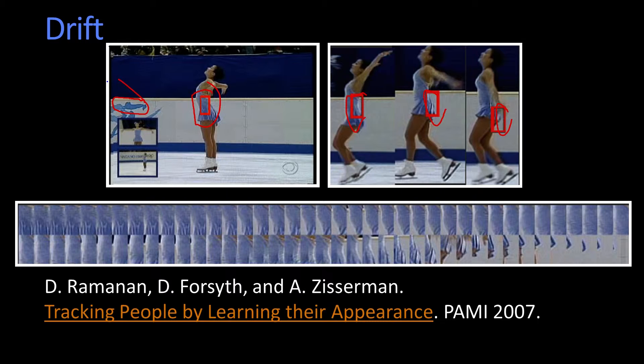And this is the problem with adaptive tracking. All real tracking, in order to fight drift, always has this balance between how quickly or how much do I change my model versus how much do I keep what I had from before.